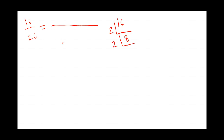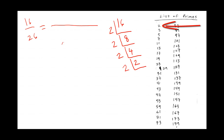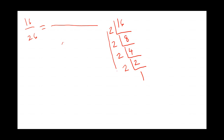Does 2 go into 4? Yes, 2 times. I draw another line. I'm still left with 2 — 2 goes into 2 one time. These are the prime factors. So I can write them in the numerator: 2 times 2 times 2 times 2. Now for the denominator 26: how many 2s go into 26? There are 13 twos in 26, so I write 13.